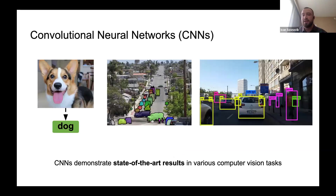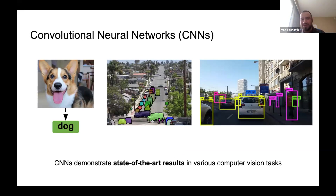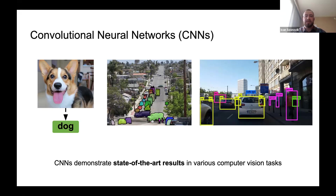Convolutional neural networks, or CNNs, demonstrate state-of-the-art results in almost any computer vision task. Now we know that transformers demonstrate very competitive results too, but for now we discuss convolutional neural networks. A CNN can be applied to image classification, where it transforms the image into a label, or to image segmentation and object tracking and detection, where the output is a mask or a bounding box. CNNs demonstrate very good results in all these tasks.